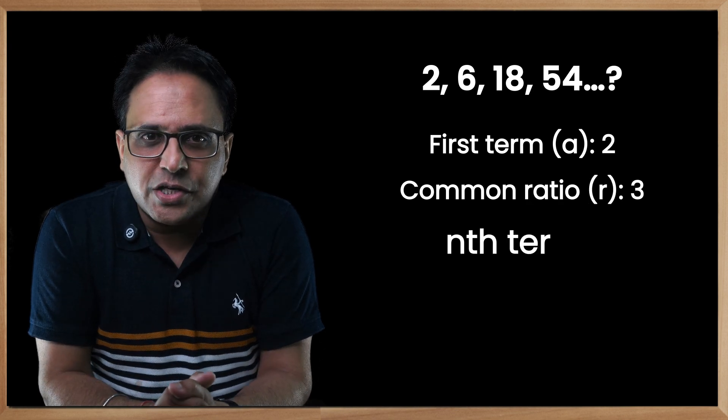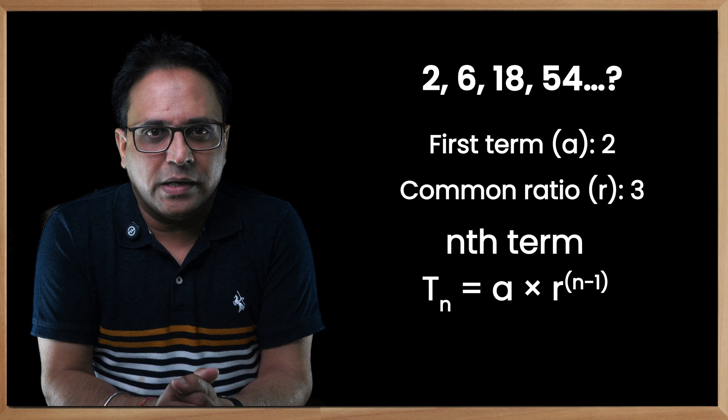The first term is a and the common ratio is r. To find the nth term, use this formula: which is a multiply by r to the power n minus 1.